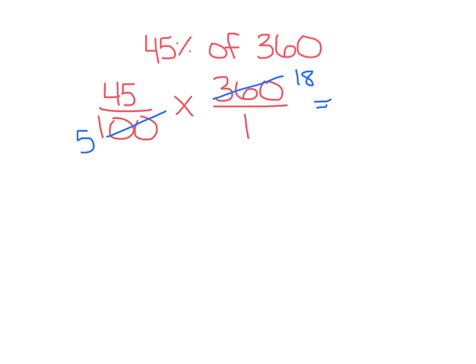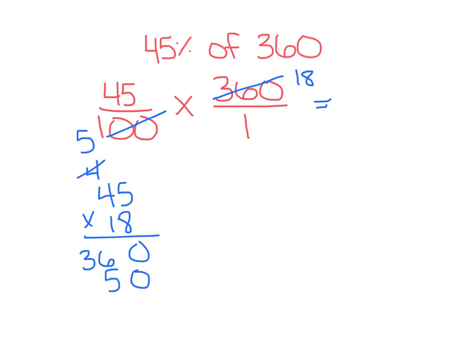Now since we're done simplifying, we can multiply right across. So 45 times 18: 8 times 5 is 40, 8 times 3 is 32 plus 4 is 36. Zero to hold our place. 1 times 5 is 5, and 1 times 4 is 4. Adding across: 0, 11, 7 plus 1 is 8. So 810 is our numerator.